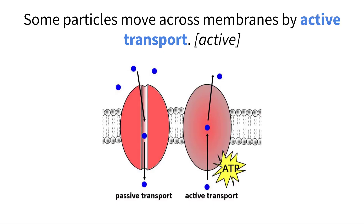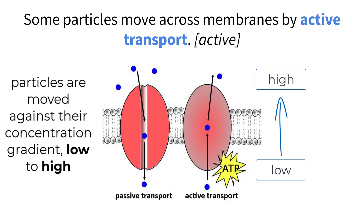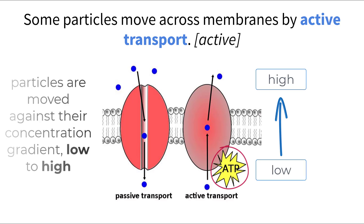Active transport is another important type of transport to move substances across the cell membrane. With active transport, particles are moved against their concentration gradient, which means they will move from a low concentration to a high concentration. You can compare this to swimming upstream against the natural current — it's going to take a lot of energy to get to the end. Naturally, particles move high to low, which is called diffusion and described by passive transport. But if the cell needs to move them from low to high, they will use cellular energy in the form of ATP to get the job done. Active transport is supported by protein channels, which use the ATP to move the particles across the membrane.